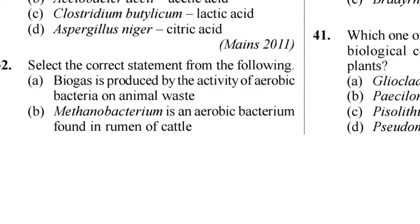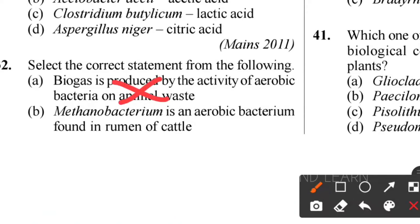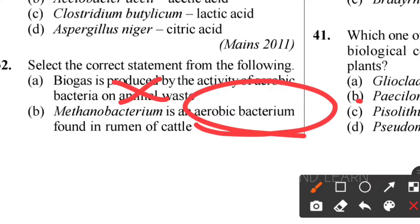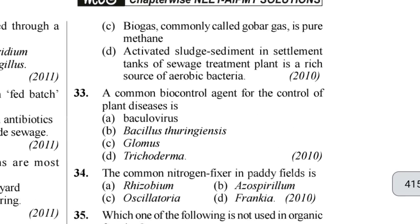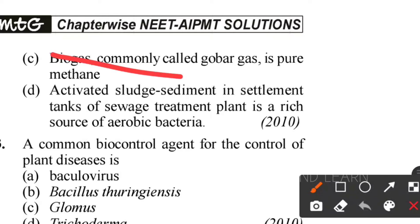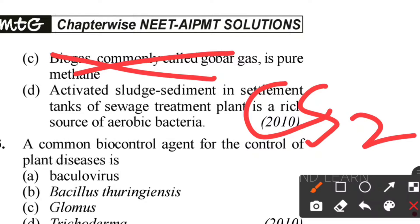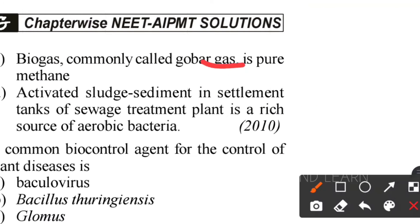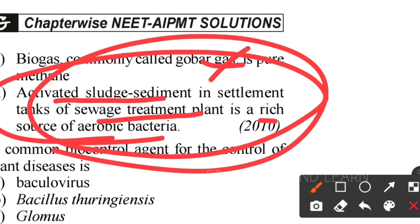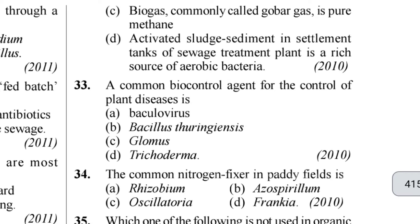Thirty-second question: select the correct statement. Option A - biogas is produced by activity of aerobic bacteria on animal waste - wrong. Option B - Methanobacterium is an aerobic bacterium - wrong, it is anaerobic. Option C - biogas is commonly called gobar gas and is pure methane - wrong, it contains methane, CO2, H2S and other gases. Option D - activated sludge sediment in settling tanks in a sewage treatment plant is rich in anaerobic bacteria - correct. Option D is the correct answer.